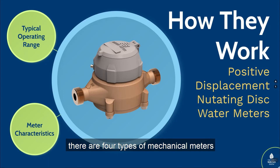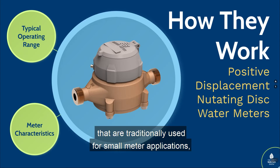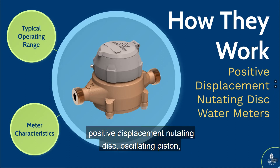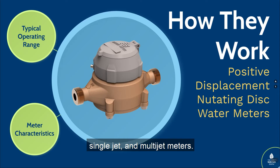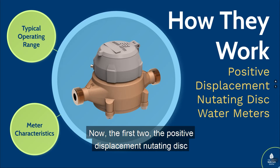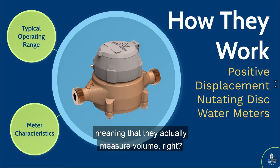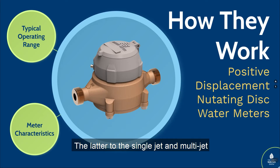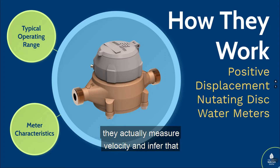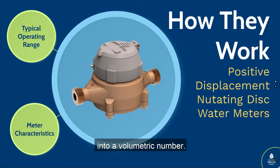There are four types of mechanical meters traditionally used for small meter applications: positive displacement nutating disc, oscillating piston, single jet, and multi-jet meters. The first two — positive displacement nutating disc and oscillating piston — are positive displacement meters, meaning they actually measure volume. The latter two — single jet and multi-jet — are inferential meters, much like a turbine meter, where they measure velocity and infer that into a volumetric number.